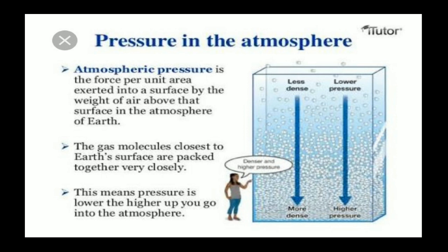For example, at sea level — like the Konkan area — water boils at 100 degrees Celsius due to higher pressure. But if you go to higher areas like Pune, water boils at 95 to 96 degrees Celsius because of lower pressure. As you go higher up, there is very less pressure, so water boils earlier.